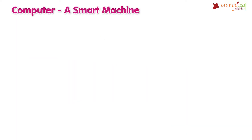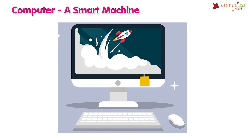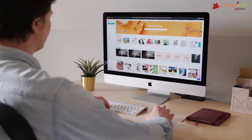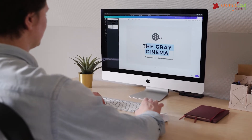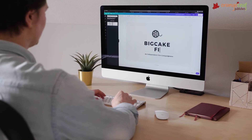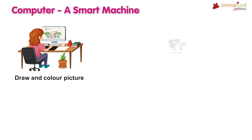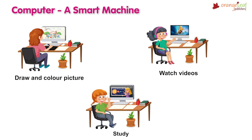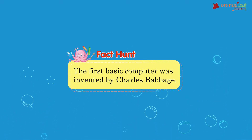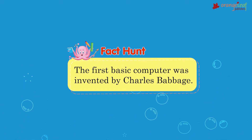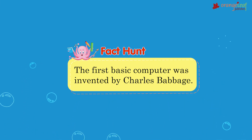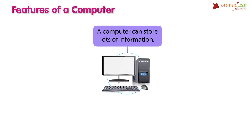Computer: a smart machine. A computer is a man-made electronic machine. It works on electricity. We use a computer as it makes our work easy and fast. We can do various tasks on a computer, like drawing and coloring pictures, watching videos, and studying. The first basic computer was invented by Charles Babbage.